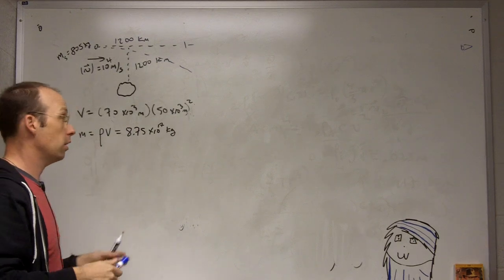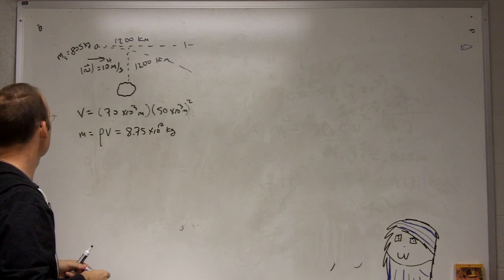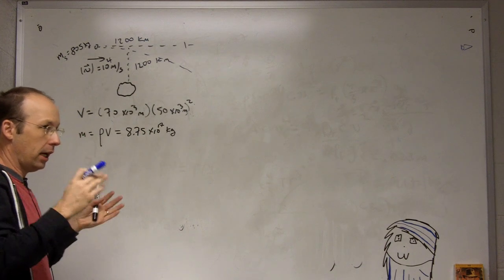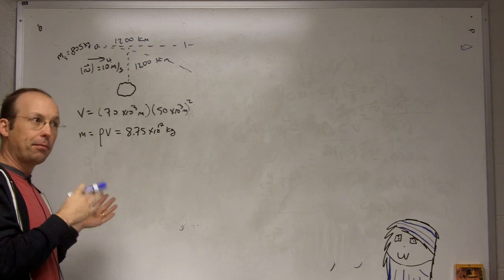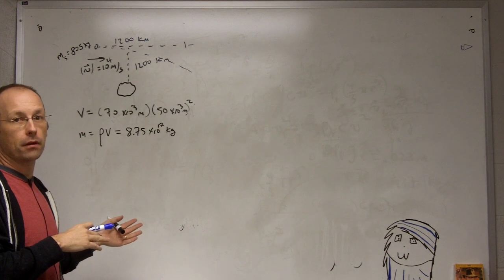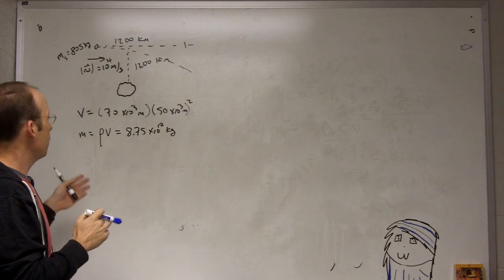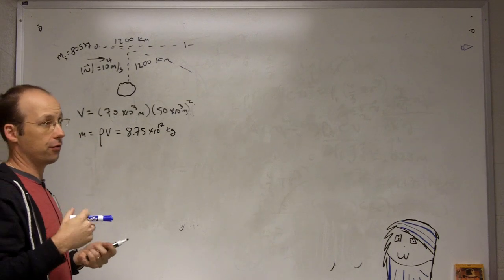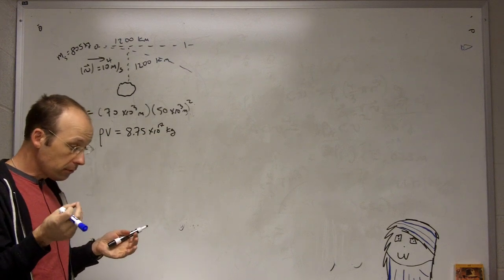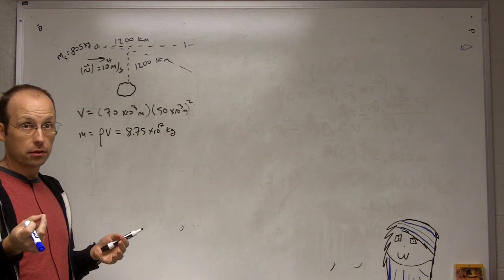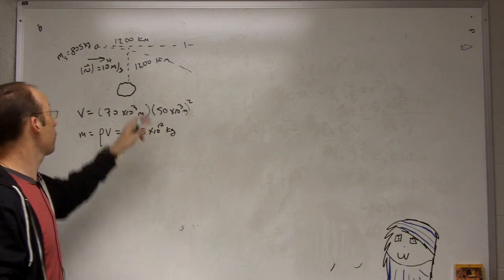What I did was I said okay, the spacecraft's going pretty fast and when it's really far away from the asteroid it's not going to be interacting with it very much. Only when it's close will be in the strongest interaction, when it's within this 1200 kilometers.